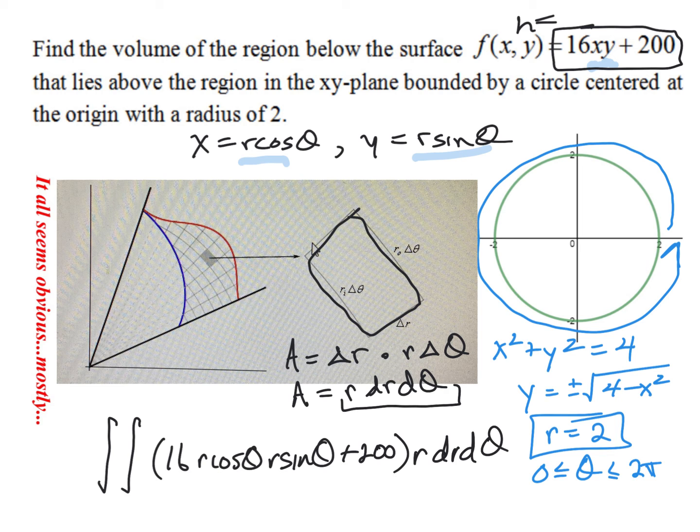Now, this looks awful. I just, you know, I want you to think that it does look like an awful integral. But please remember, as we go through it, the first thing you should just do is distribute the r in. So you could have like, oh, 16 r cubed cosine theta sine theta plus 200 r. And then remember, one of the variables is a constant, okay?